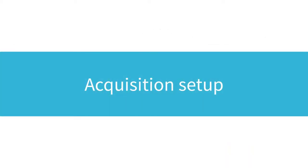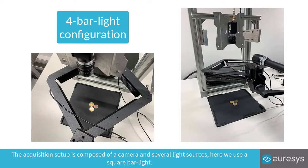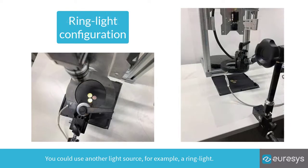Acquisition Setup. The acquisition setup is composed of a camera and several light sources. Here we use a square bar light. You could use another light source, for example, a ring light.